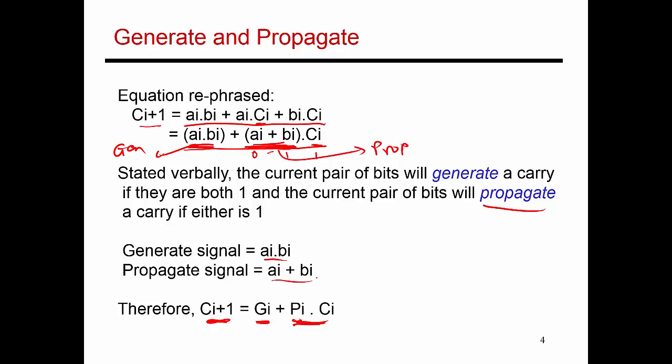The values of generate and propagate are determined entirely by the inputs A and B — they are not a function of the carry that might be coming in from previous stages. But the carry out of a given stage is indeed a function of the carry that comes out of the previous stage. All we've done is reorganize this equation to come up with this slightly more intuitive form using generate and propagate. I've not yet explained why this is useful — let's carry on to the next slide.